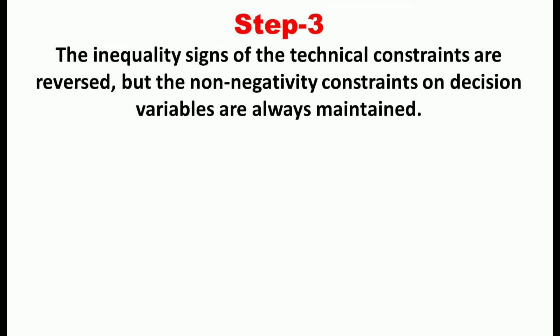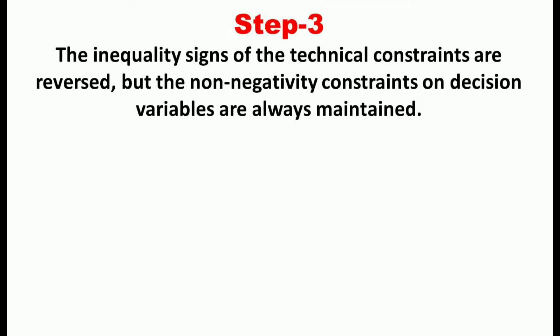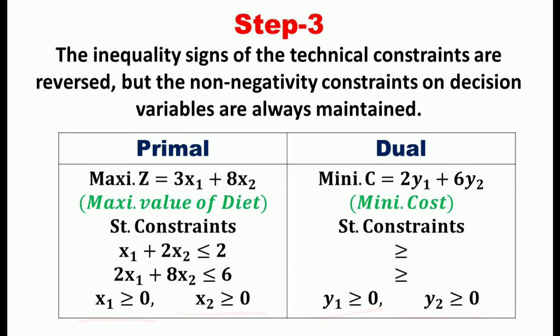The third step is that the inequality signs of the technical constraints are reversed, while the non-negativity constraints on the decision variables are always maintained. In our example, the inequality signs of the primal constraints are ≤, so they will be changed to ≥ in the dual problem. The non-negativity constraints are also maintained: just as x1 and x2 ≥ 0, the variables y1 and y2 are also ≥ 0.